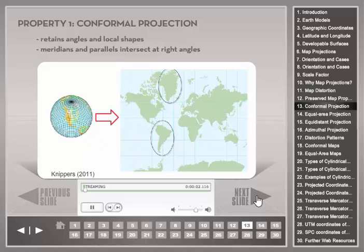A projection is conformal if at any particular point the scale is the same in all directions. Conformal map projections preserve local angles and shapes, but as the region becomes larger, they show considerable area distortions. A necessary but not sufficient condition is that meridians and parallels intersect at right angles. An example is the Mercator projection, which is a cylindrical map projection with a conformal property. Although shapes are represented correctly on local regions, the area distortions are significant towards the polar regions.